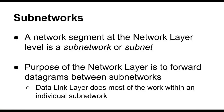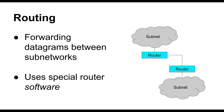Within the network layer we deal in concepts of subnetworks. A subnetwork is a network segment at the network layer — sometimes also known as a broadcast domain or subnet. The purpose of the network layer is to take all of these different subnetworks, which you can think of as isolated units, and link them together by forwarding datagrams between them. Within an individual subnet, the data link layer does most of the heavy lifting, but between individual subnetworks the network layer kicks in and forwards the datagrams through a technique we call routing.